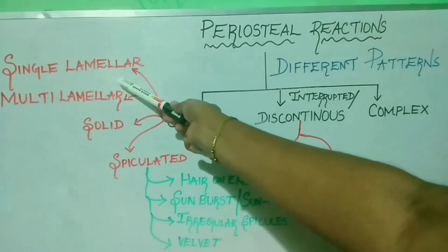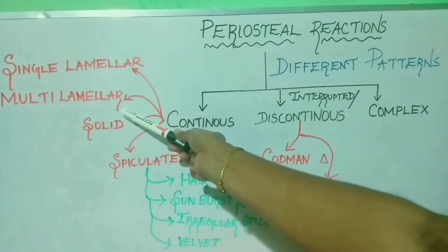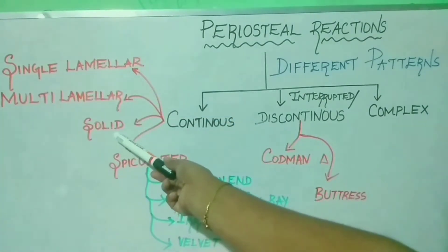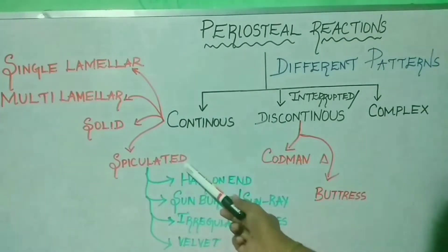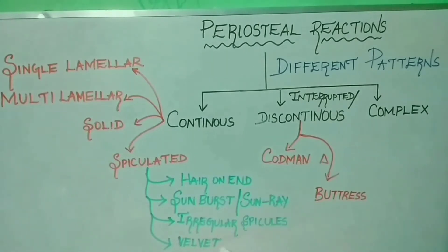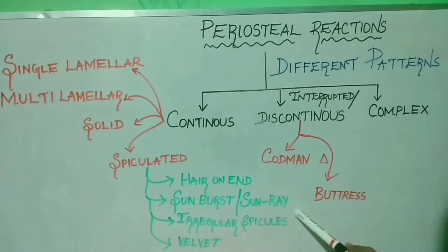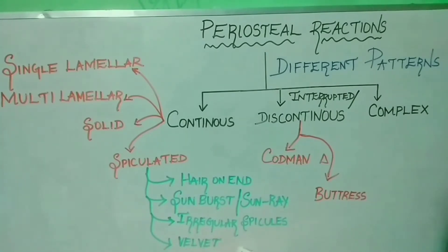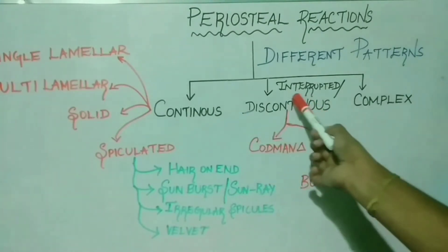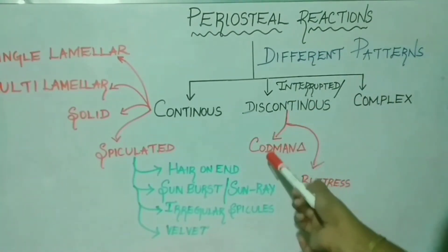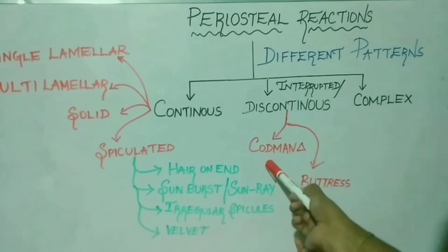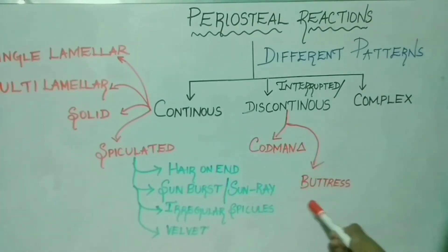Under the continuous pattern, the following types of periosteal reactions are found: single lamellar, multi-lamellar, solid, and spiculated periosteal reactions. Spiculated periosteal reaction includes hair-on-end pattern, sunburst or sunray pattern, spicules of irregular pattern, and velvet pattern. Under discontinuous or interrupted periosteal reaction, there are two types: Codman's triangle and buttress bone deposition.